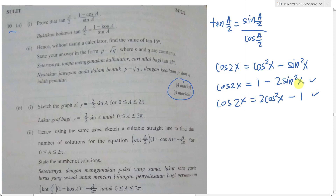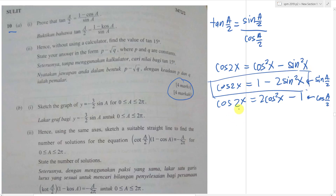To get the sine half-angle, I use the formula with only sine on one side. I'll use it to get sin(a/2). I let x = a/2 and substitute into all the x values. So I get cos(2·a/2) = 1 − 2sin²(a/2).